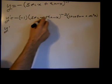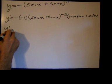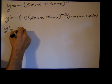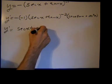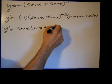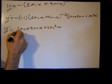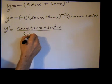We'll put secant x plus tangent x to the negative two in the denominator as secant x plus tangent x squared. So the numerator is secant x tangent x plus secant squared x, divided by secant x plus tangent x quantity squared.